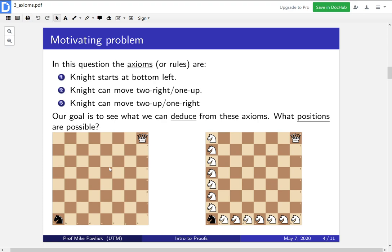So take a moment right now to play around with this problem. Make a chessboard if you want, or find one online, and play around, see what spaces you can reach using only these three rules. Make a conjecture as to whether or not you can get the king.